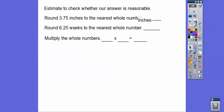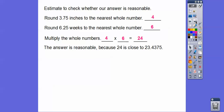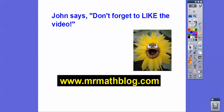Let's estimate to check whether the answer is reasonable. Round 3.75 inches to the nearest whole number — that's 4 inches. Round 6.25 to the nearest whole number — that rounds to 6. So 4 times 6 gives us 24. Our answer of 23.4375 is close to our estimate of 24, so we know the answer is reasonable. All right, I hope you're having a great year — be nice to your math teacher. Take care!